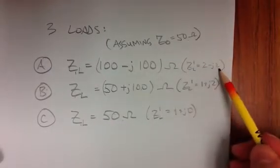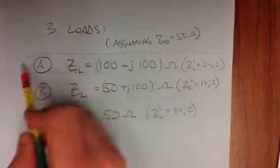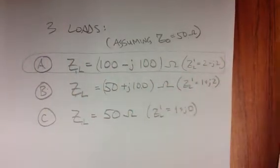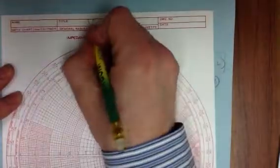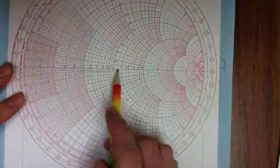So I plot 2 minus J2, I draw a circle, and I look. So the first one is what we'll do first. 2 minus J2. So I'm going to call this one VSWR, and I do 2 minus J2. I look along the R line for 2, 2 is here.